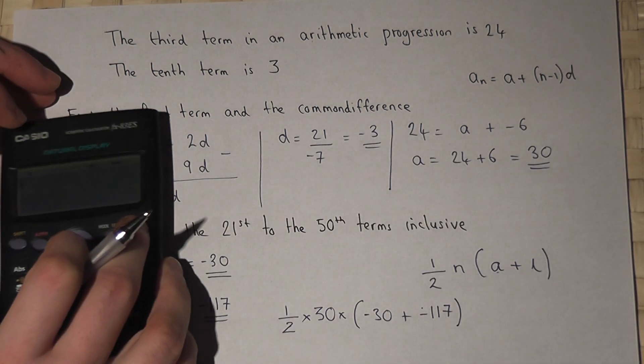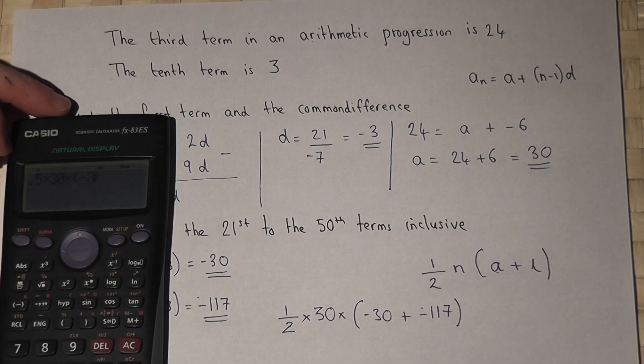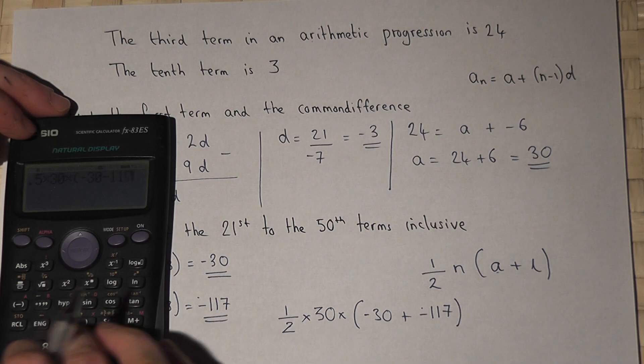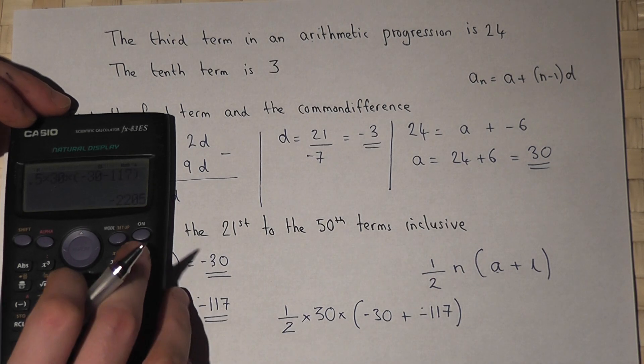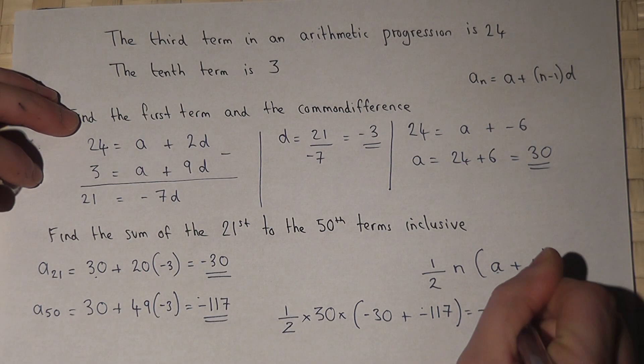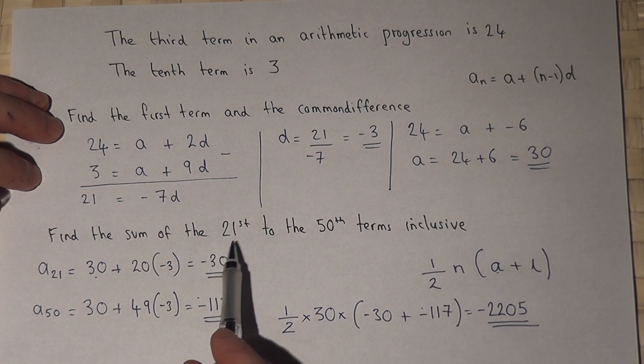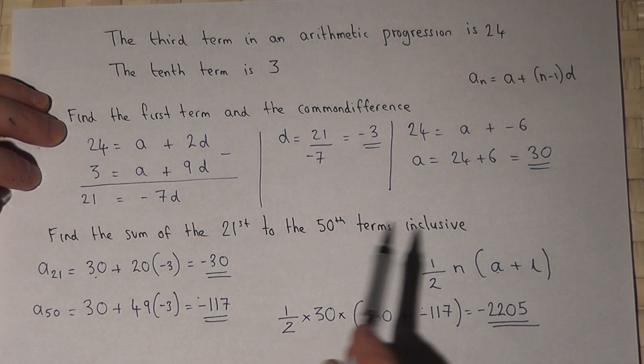So on our calculator, we do 0.5 times 30 times minus 30, take 117, and that becomes minus 2205. And that is the sum of the 21st to the 50th term inclusive.